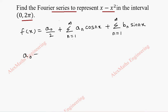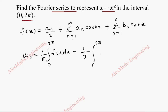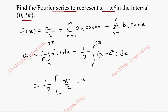Now let's find a₀. Its formula is (1/π) integral from 0 to 2π of f(x) dx. So that is (1/π) integral from 0 to 2π of (x minus x²) dx. On integration we get x²/2 minus x³/3, with the limit from 0 to 2π.